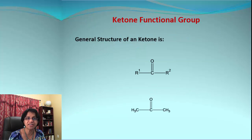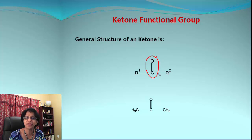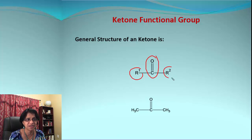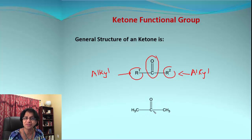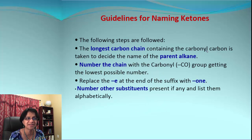Now let's talk about the ketone functional group. This can be confusing because ketone and aldehyde both have a carbonyl function. The main difference is that in an aldehyde, one side is alkyl and the other side is hydrogen, whereas in a ketone, both groups are alkyl. A classic example has CH₃ on both sides with a carbonyl in the middle.